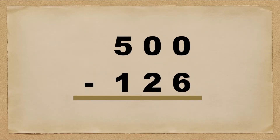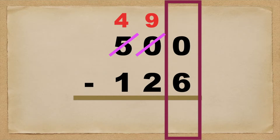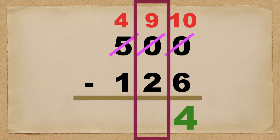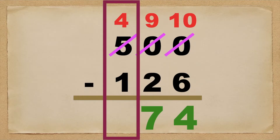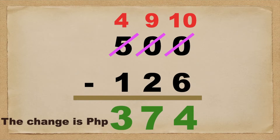In writing the solution, align the numbers according to their place value. So we have 500 minus 126. Starting from the ones place: 0 minus 6 cannot be done, so we're going to borrow — the 5 at the hundreds place will become 4, the middle 0 will become 9, and the 0 at the ones place will become 10. So 10 minus 6 equals 4. Then 9 minus 2 equals 7. Then 4 minus 1 equals 3. The final answer is 374 pesos.